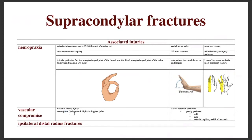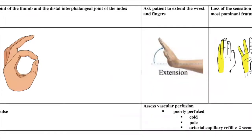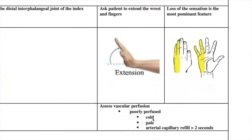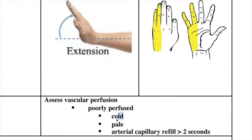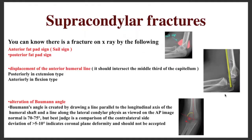Vascular compromise must be assessed carefully. Check the pulse by palpation; the most commonly injured artery is the brachial artery. Assess vascular perfusion by checking if the hand is cold, pale, or has capillary refill more than two seconds. If there is no adequate perfusion after reduction, vascular exploration is needed.